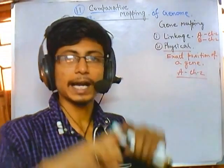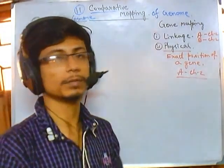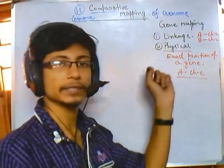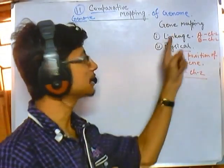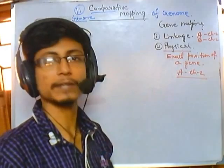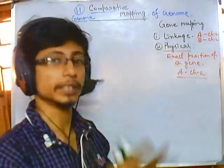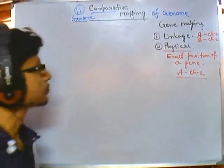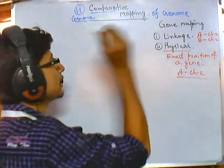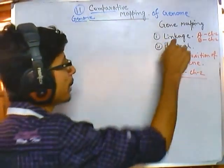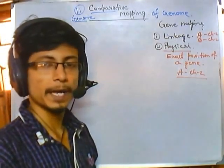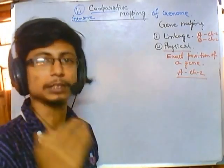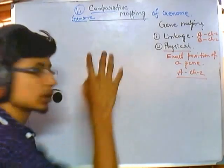We can get the idea of where genes are located in the whole genome using gene mapping techniques. Neither linkage nor physical mapping alone is sufficient — we need the results of all these techniques together to derive a conclusion. Here we are talking about comparative mapping, which means we have to compare the mapped genome.